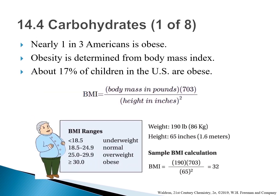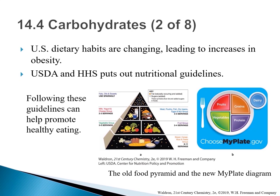There is an obesity epidemic among children and adults in the U.S. — roughly a third of Americans are obese, and about 17% of children. Obesity is determined from body mass index (BMI), calculated as: BMI = (body mass in pounds × 703) ÷ (height in inches²). U.S. dietary habits are changing over the decades, leading to increases in obesity. The USDA and Department of Health and Human Services put out nutritional guidelines for U.S. citizens every five years.